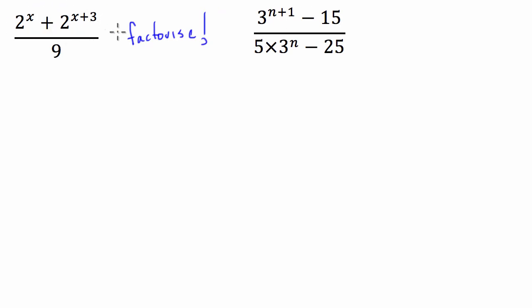We can see that in this expression we've got 2 to the x plus 3. Now, we're going to use the index law a to the n times a to the m is equal to a to the n plus m. We're going to use this index law basically in reverse to get this 2 to the x plus 3 at the top of this expression. So we're going to have 2 to the x plus 2 to the x times 2 to the power of 3, all divided by 9.